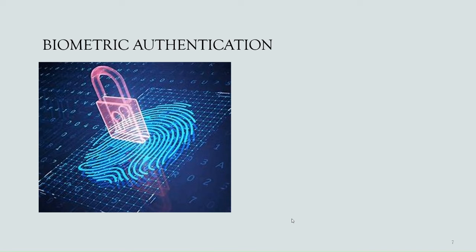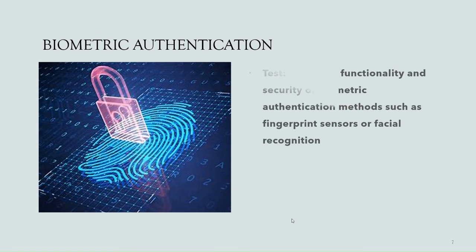Next, we'll see biometric authentication related test cases. This category includes test cases which verify the functionality and security of biometric authentication methods such as fingerprint sensors or facial recognition — one of the very important features of Android. If these biometric authentication methods are unreliable or insecure, the manufacturer may issue updates to enhance the security and performance of these features. For example, if someone else is able to use their fingerprint to log in to your phone, that's a very big security breach. All such test cases come under this biometric authentication category.